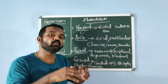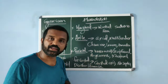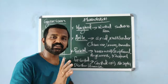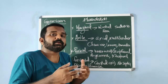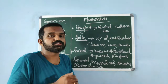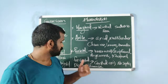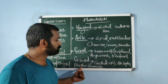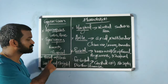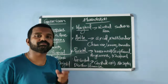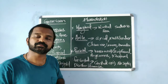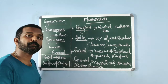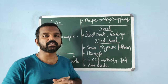Parietal placentation: ovules are arranged on the inner wall of the ovary or on the peripheral part — examples: Argemone, mustard. Here the ovary is initially single-chambered but becomes two-chambered due to formation of a false septum called replum. Free central placentation: ovules are arranged along the central axis and no septa are present — examples: Dianthus and primrose. Basal placentation: the placenta is at the base of the ovary with a single ovule — examples: sunflower and marigold.